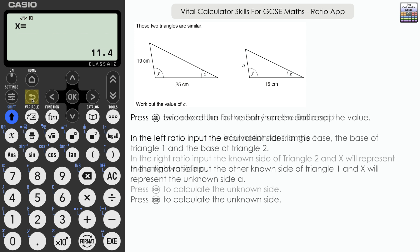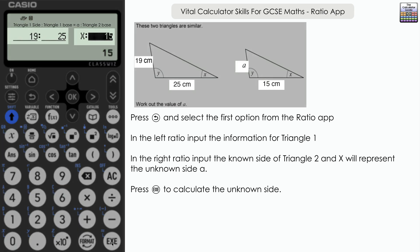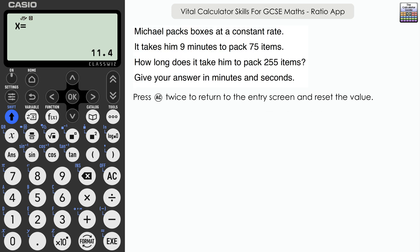A different approach using the first ratio option: we input the known values from the first triangle reading left to right — the left side is 19 and the base is 25 — equals the unknown side X on the smaller triangle to the base of 15. So we've got the larger triangle on the left-hand side and the smaller triangle on the right-hand side, written very similarly to how we're reading left to right. Press Execute twice — the same answer: 57 over 5, decimal equivalent 11.4.